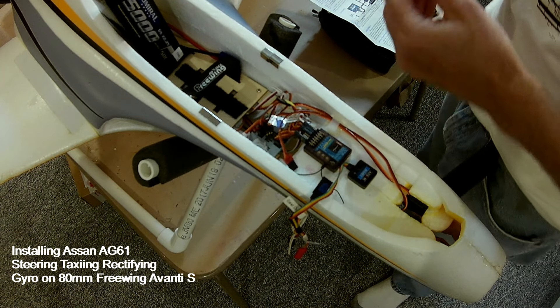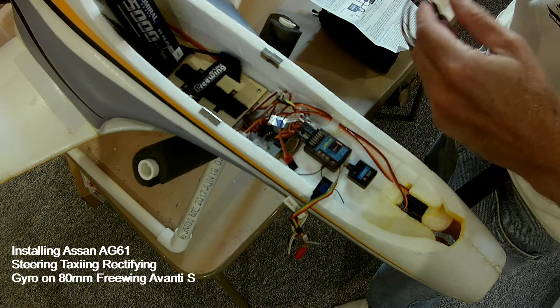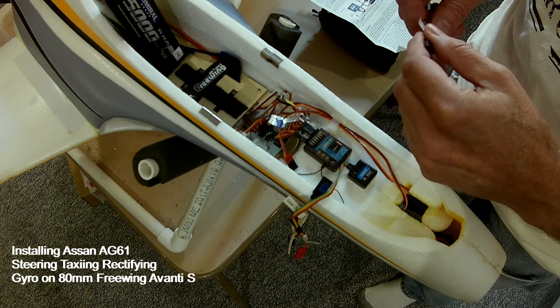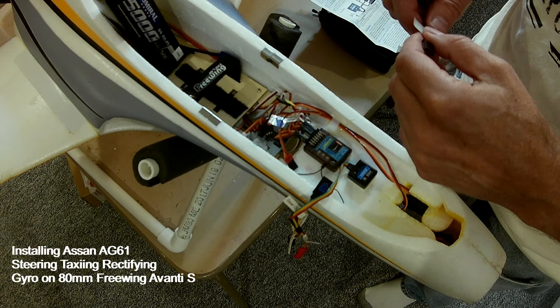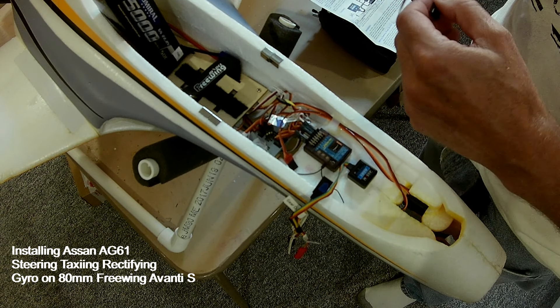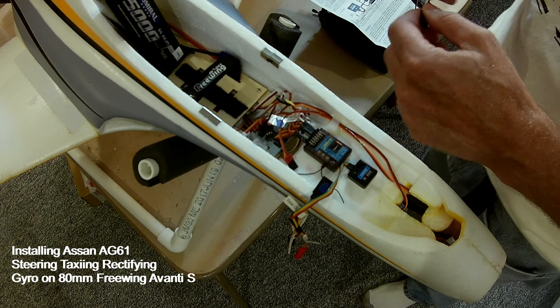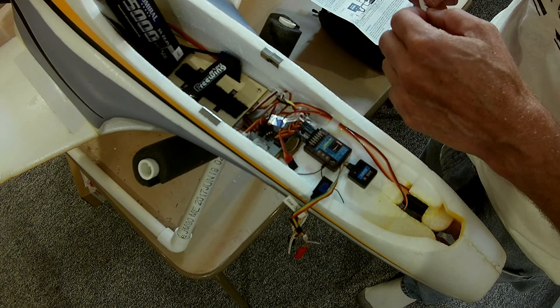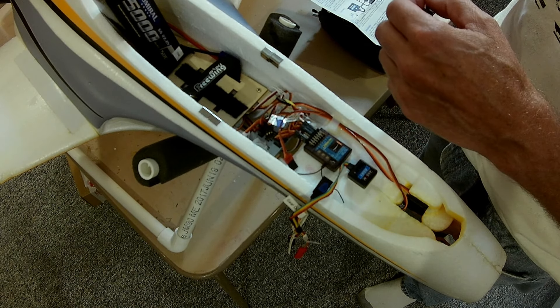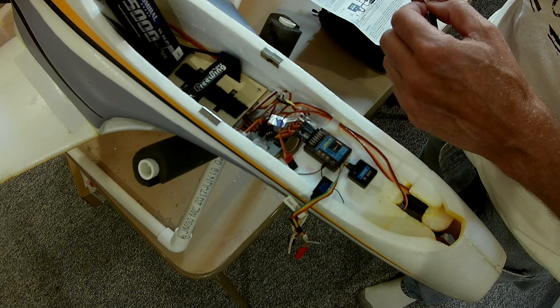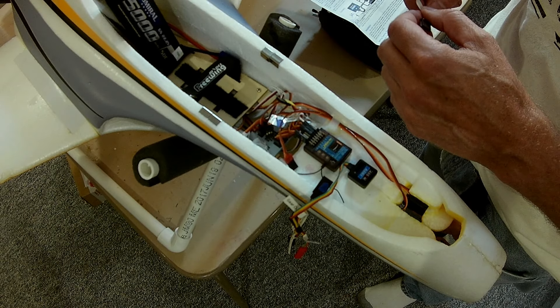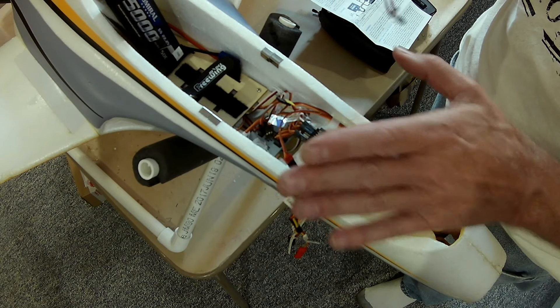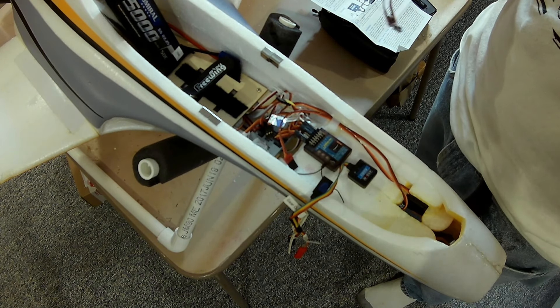Alright, what we're going to do today is give a little install and flight review of the Asan AG61 steering gyro. What this does is it keeps your plane going straight, especially on a grass field that may be very bouncy, or even on an asphalt runway where pilots have the tendency to oversteer. Even if it's going off just a little, this gyro keeps you going straight on without any input for the run, which is really good.